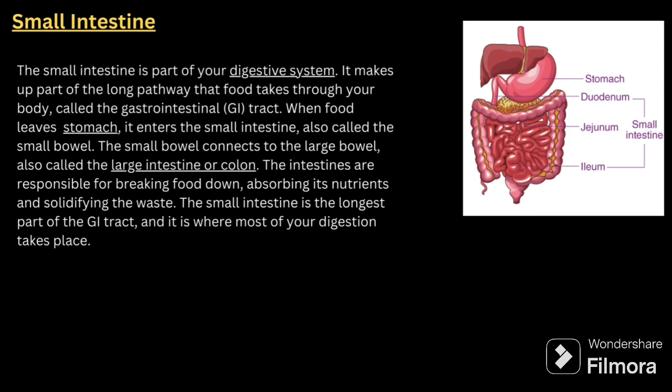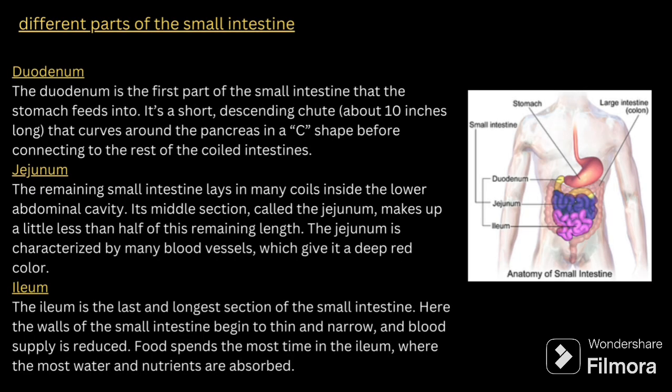The small intestine is part of the digestive system and makes up a long pathway called the gastrointestinal tract. When food leaves the stomach it enters the small intestine, also called the small bowel. The small bowel is connected to the large bowel, which is the large intestine or colon. The intestines are responsible for breaking down food, absorbing nutrients, and solidifying waste. The small intestine is the longest part of the GI tract where most digestion and nutrient absorption take place.